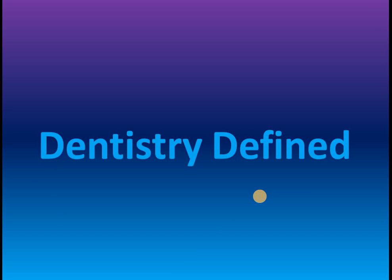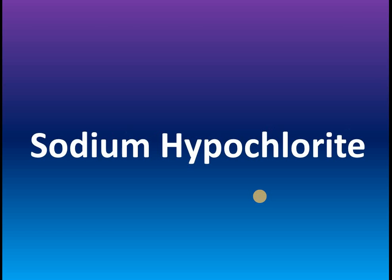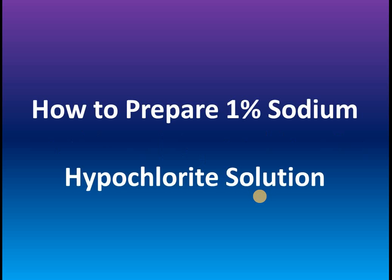Hello friends, today we are going to learn about one of the most important aspects of a highly effective chemical agent — sodium hypochlorite. Sodium hypochlorite has the chemical formula NaOCl, which is a slightly yellowish solution with a characteristic odor, with wide applications from surface disinfection to use in routine dental practice, based on the medical grading and the percentage of the solution.